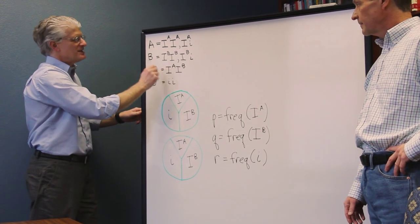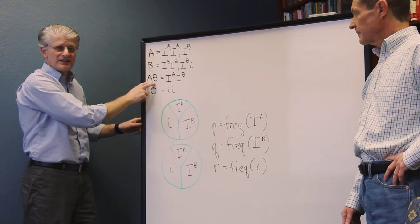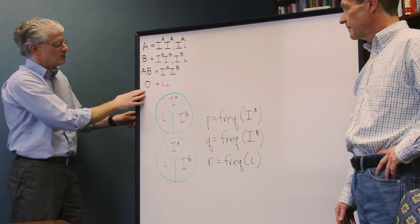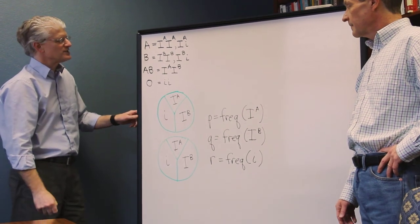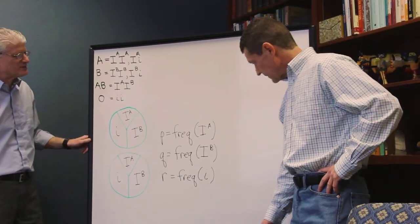Same thing with the B blood type. Both alleles can be homozygous for IB or heterozygote. The AB, the co-dominant form we talked about earlier in class, was IA, IB. And finally, the O type, homozygous for the two recessive alleles. And so Mark, I'm going to let you take it from here to talk about some of these frequencies.